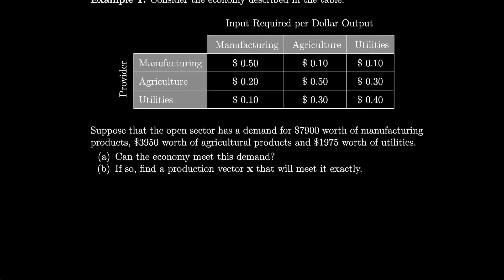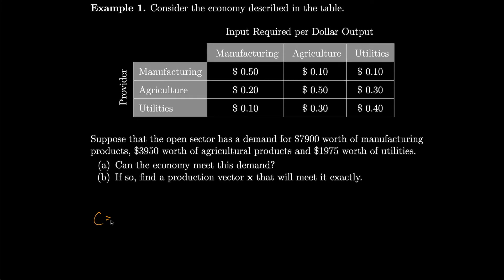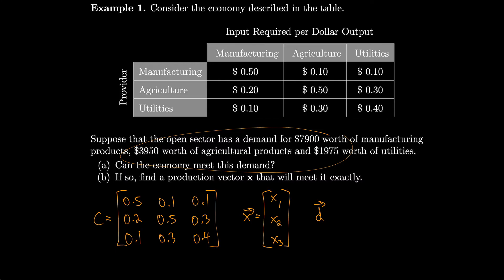We need to write out our matrix C. We can get that just by reading off these values. So that's 0.5, 0.1, 0.1, 0.2, 0.5, 0.3, 0.1, 0.3, and 0.4. And then we don't know what x is yet, so we'll call it x1, x2, and x3. We know what the demand is—they just told us the open sector wants this amount: $7,900, $3,950, $1,975.